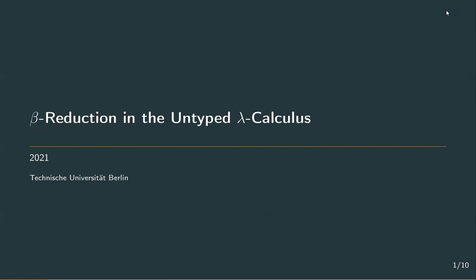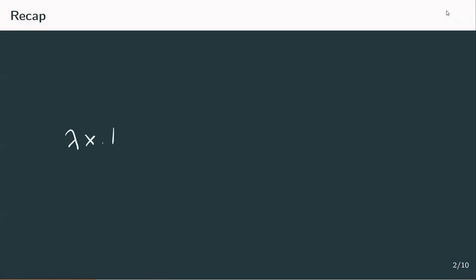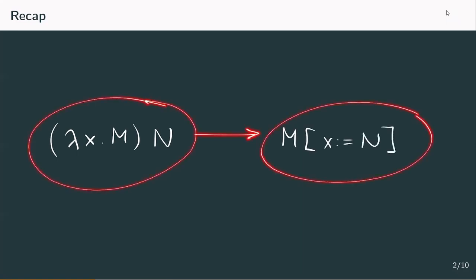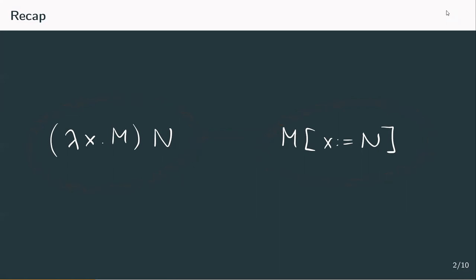So what is computation? Computation are the steps we need to take in order to get from applying a function to an input to substituting and simplifying it. Applying a term to an input was denoted by an abstraction: lambda x dot m applied to a term n, and substitution was written as m with square brackets x defined as n. We need a notion to get from here to here, and this notion will be called beta reduction — one step beta reduction to be precise.